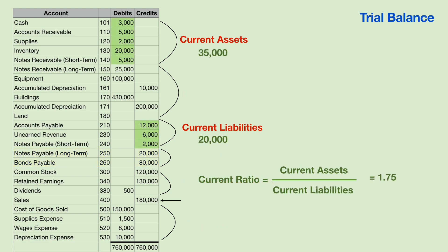Let's look at the categories of current assets and current liabilities. If you add up all the current assets in this case, they add up to $35,000, and the current liabilities add up to $20,000. There is a ratio used in business called the current ratio — you take current assets divided by current liabilities. In this case, it equals 1.75. Every business will have their own goal for this ratio. The current ratio gives you an idea of whether or not you're going to run out of cash in the next year.